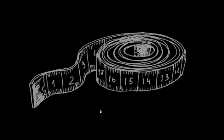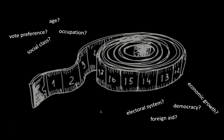In the social sciences, before we can do any kind of quantitative analysis, we need to make measurements. For example, in a survey we might ask respondents what their age is, what their occupation is, what their social class is, how they voted in the most recent elections. Or if we look at countries, we might be interested in what the electoral system is, how much foreign aid it receives, what the level of economic growth is, whether or not it's a democracy. We might look at political parties and be interested in how many members they have or what their left-right position is.